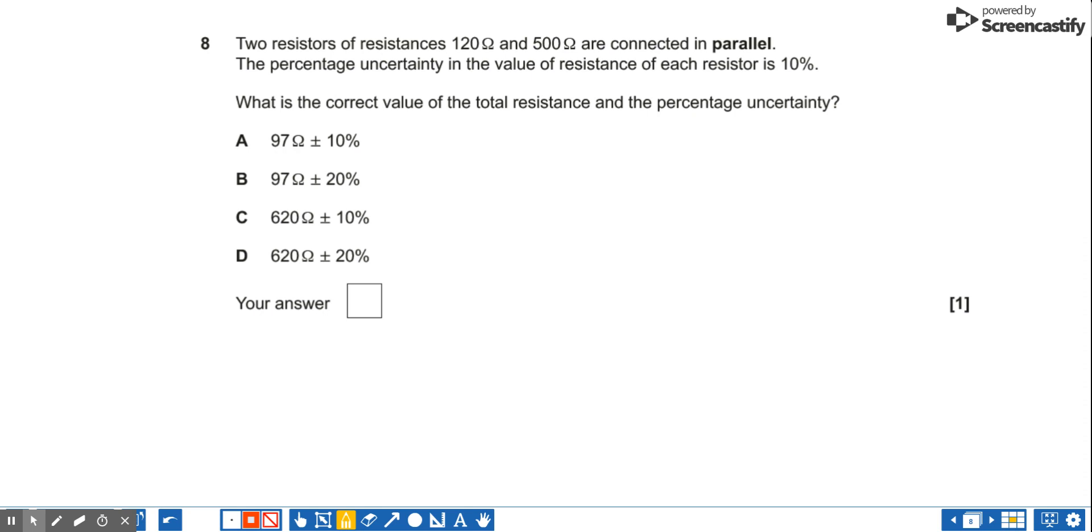So you need to know that when we're connected in parallel, 1 over the total resistance is equal to 1 over R1 plus 1 over R2.